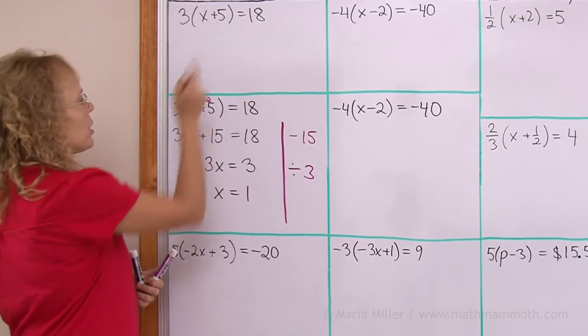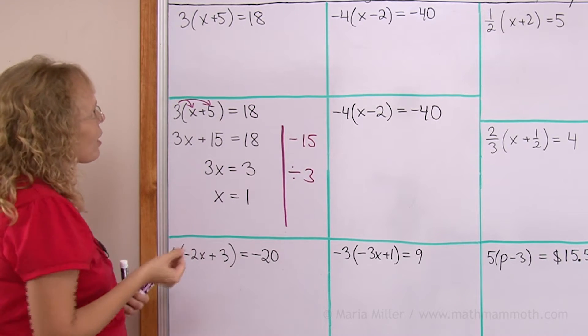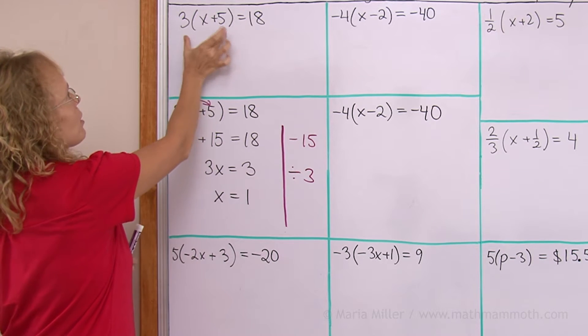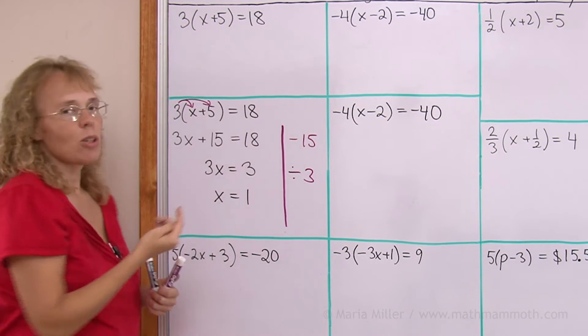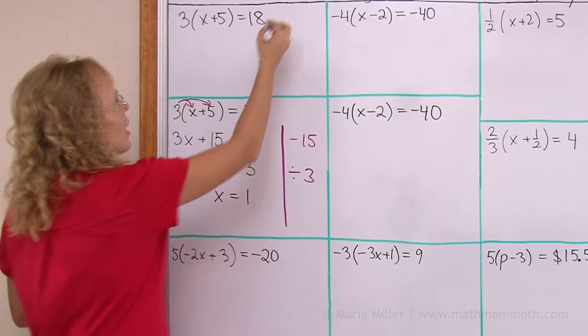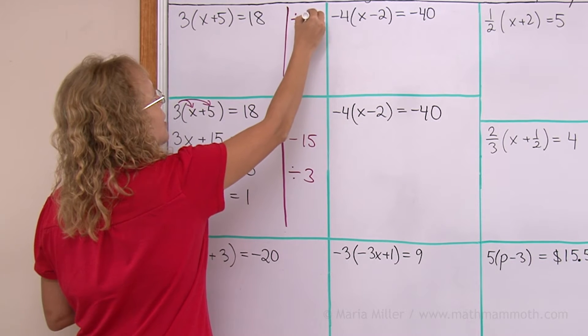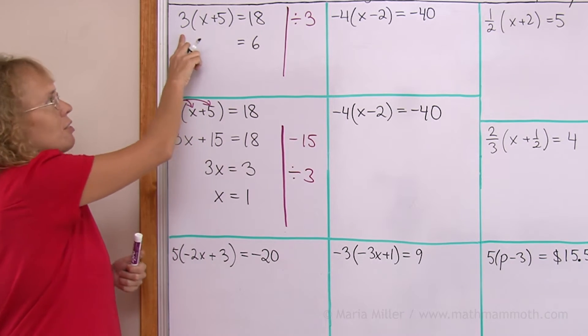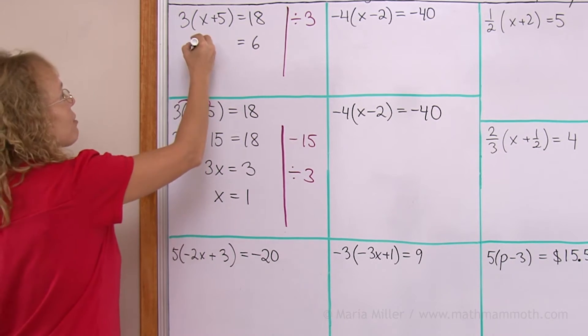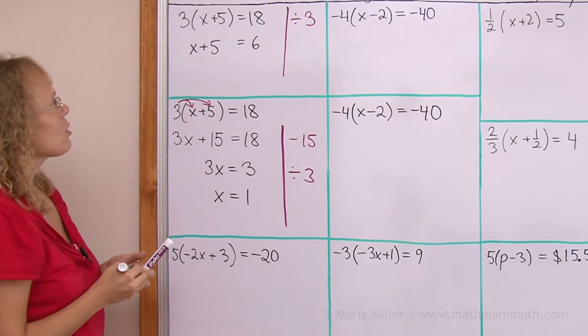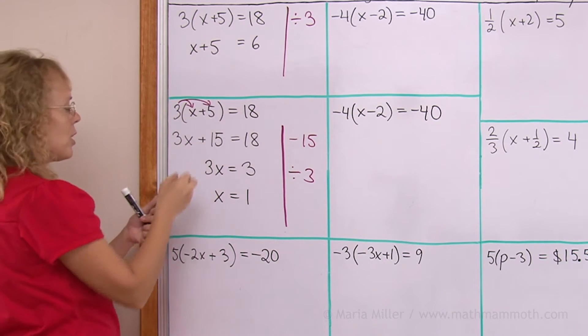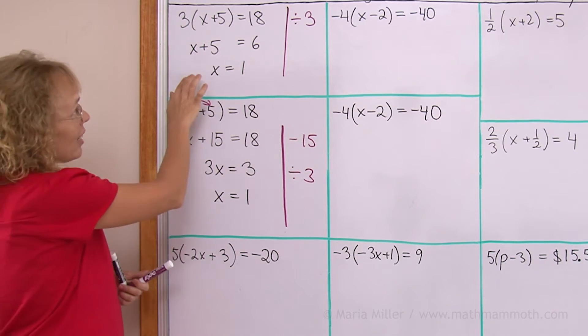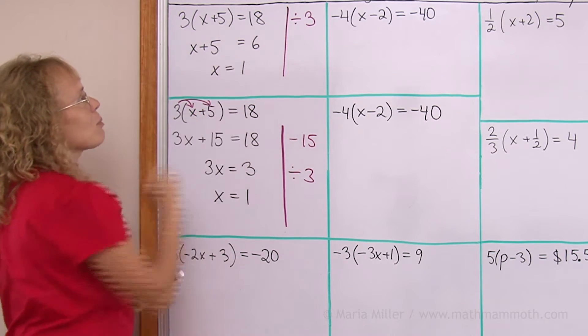Now let's do it in a different way. And in this way, I'm not going to use the distributive property. Instead, I noticed that there's 3 here, 3 times this quantity. And then here is a number that's also divisible by 3. So I will start out by dividing both sides by 3. And then that leaves 6 on this side. On this side, the 3 and divide by 3 cancel each other. So I'm left with x plus 5 alone. And then of course, here now, you would subtract 5 from both sides. So you get again x equals 1. It ends up being a little bit shorter in this case, simply because 18 was easily divisible by 3.